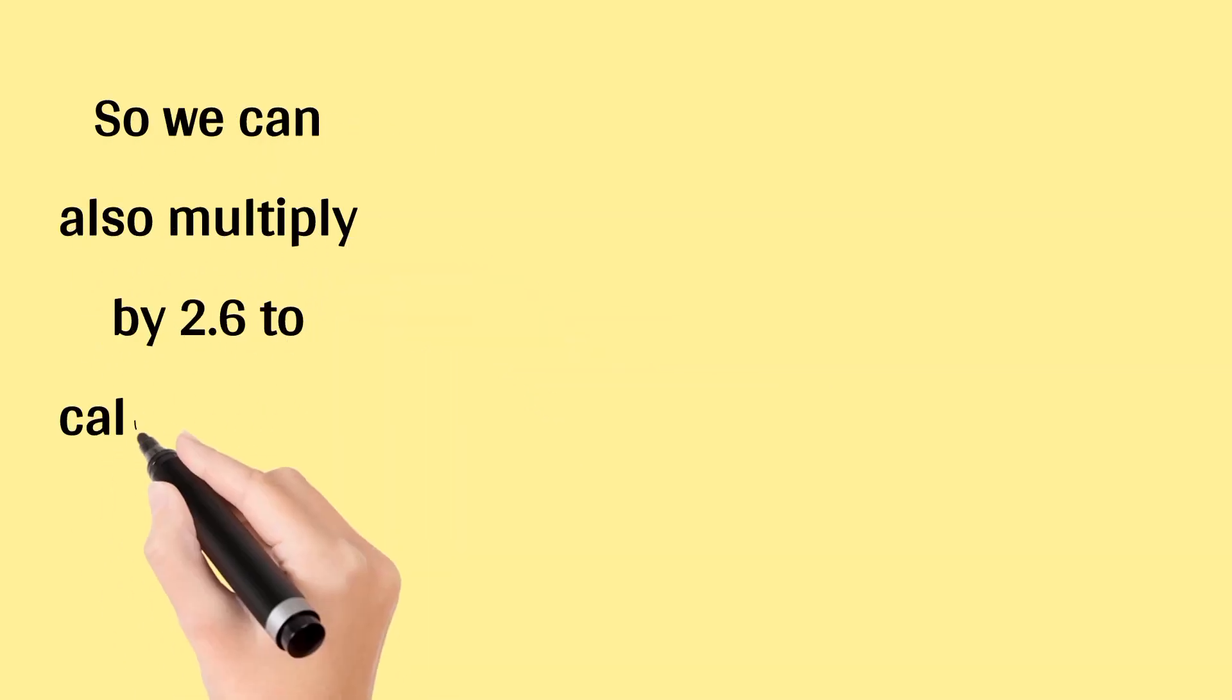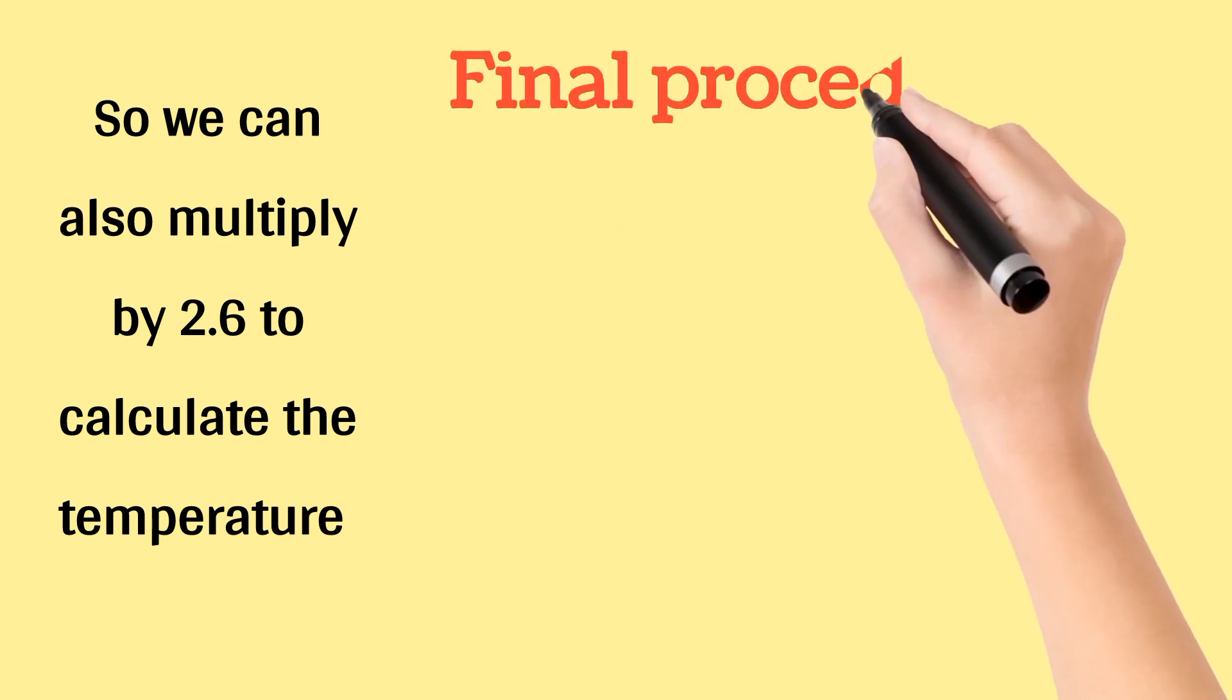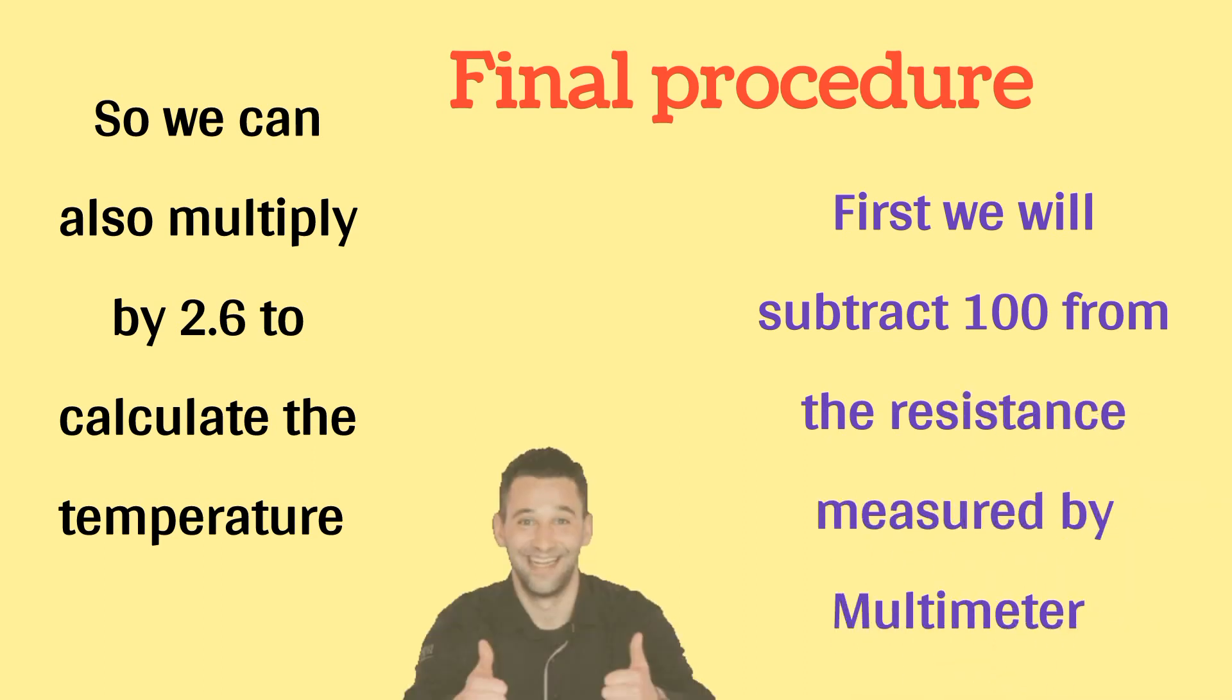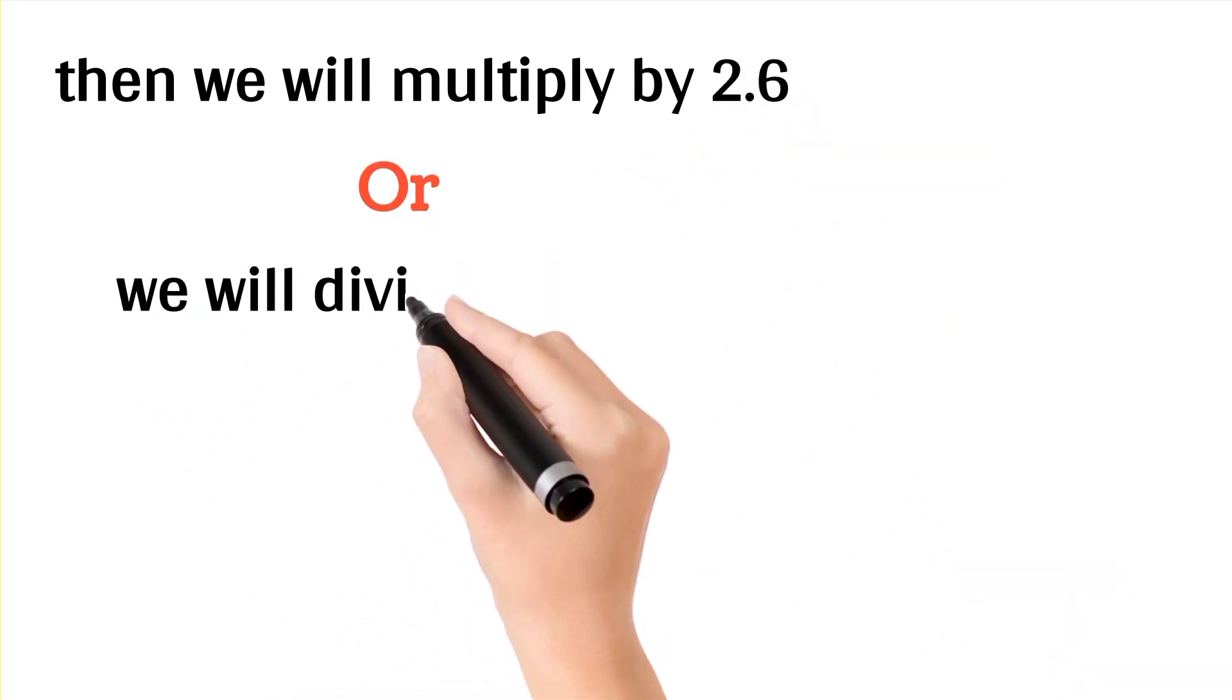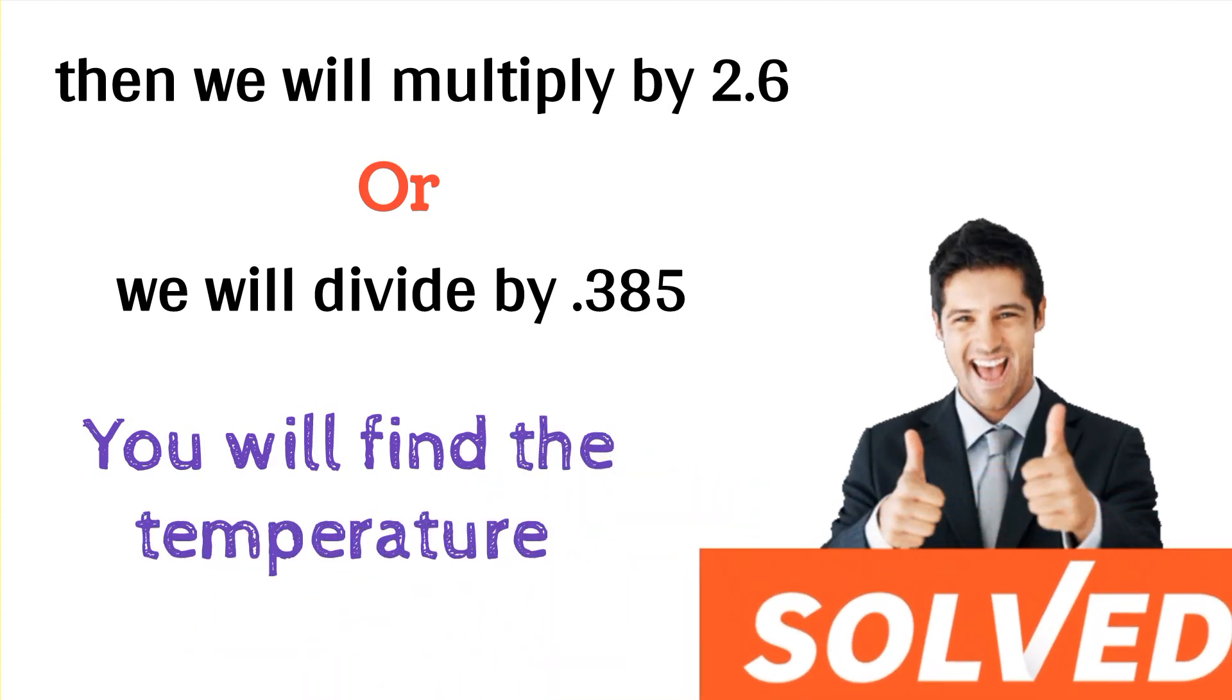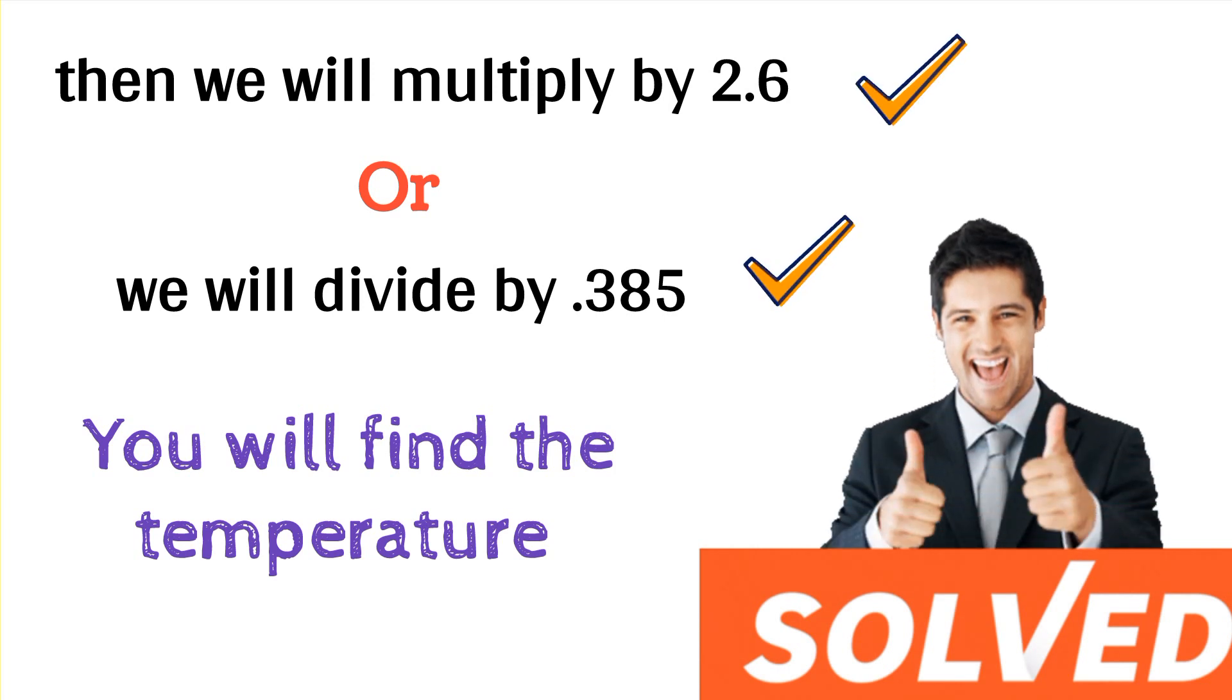So we can also multiply by 2.6 to calculate the temperature. So the final procedure to check the temperature is first we will subtract 100 from the resistance measured by multimeter, and then we will multiply by 2.6 or we will divide by 0.385, then you will find the temperature. But people have doubts regarding multiply and divide, so remember you can do both either multiply by 2.6 or divide by 0.385.